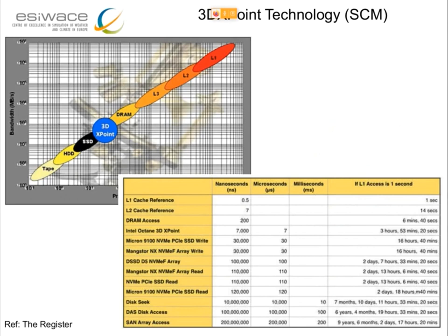3D XPoint is just an example of storage class memory — it's widely popular now. It sits between your SSD and DRAM. We have all experimented with 3D XPoint and the performance it can offer. It comes in both DIMM form factor or PCIe form factor, so you can access it as a block device or as memory. The big question is what's the best way to access it — whether you use it as persistent memory or as a very high-performance storage tier. You can mix and match across all these different paradigms.